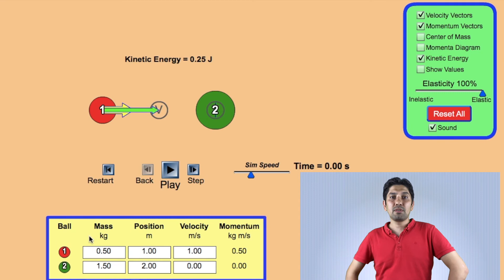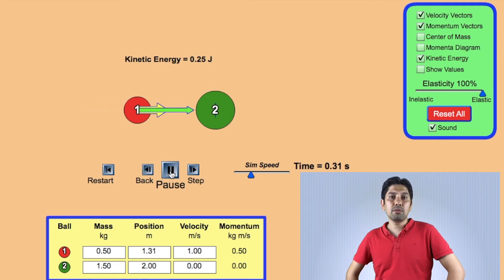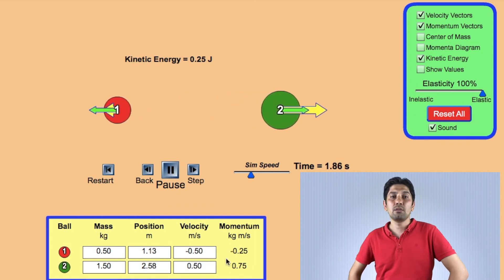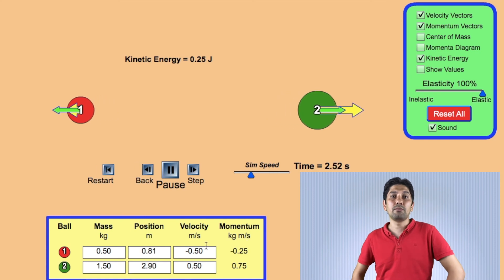Momentum can be transferred from one object to another object. When objects collide, total momentum before is equal to the total momentum after the collision, which is known as the conservation of momentum.